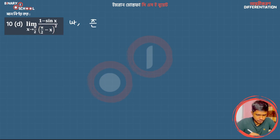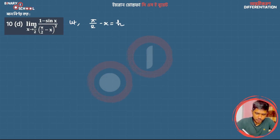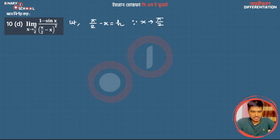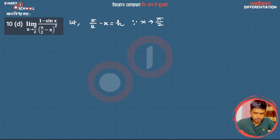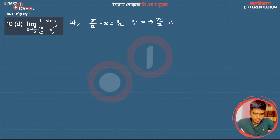So x → π/2, and substituting pi by 2 minus h, so as x → π/2, h → 0. The limit now becomes in terms of h. Let's work with h — the solution using h as a substitution variable. Okay, so h: the solution.